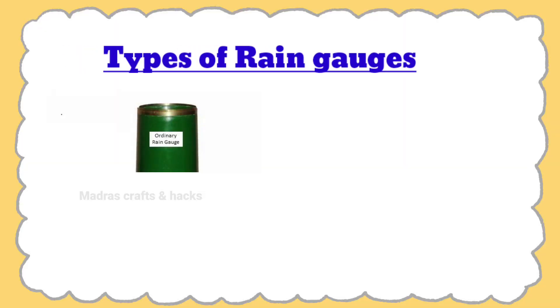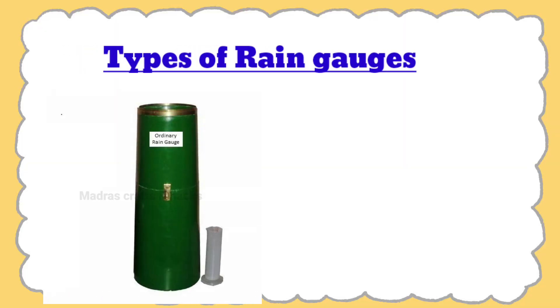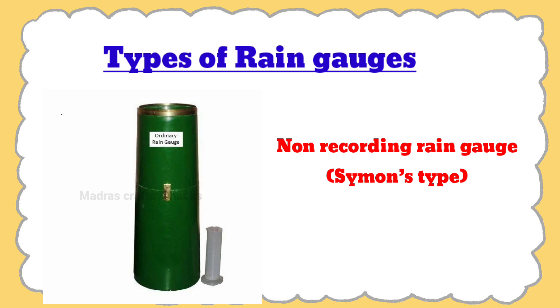There are many types of rain gauges. The commonly used standard non-recording rain gauge prescribed by the IMD is the Simons rain gauge.